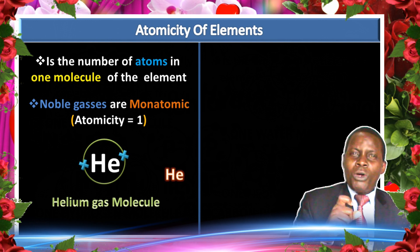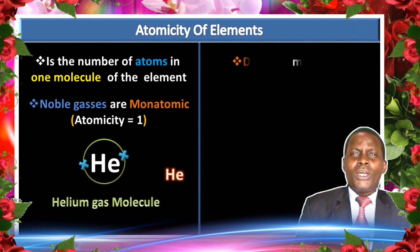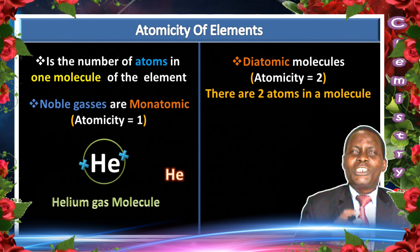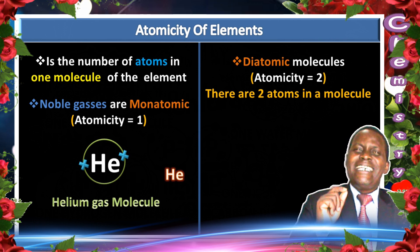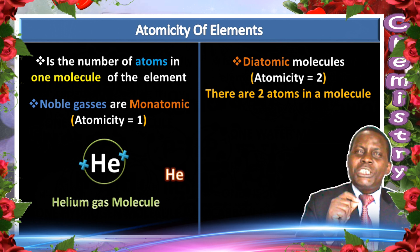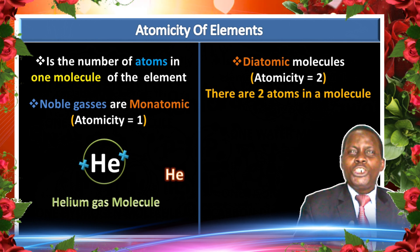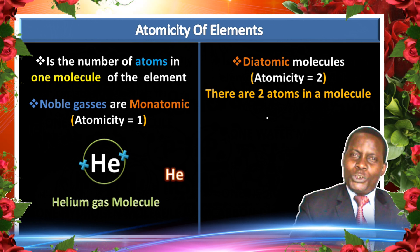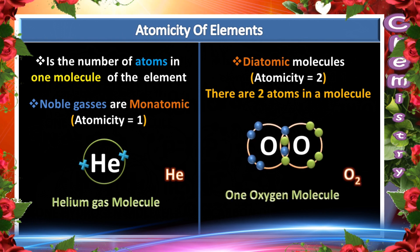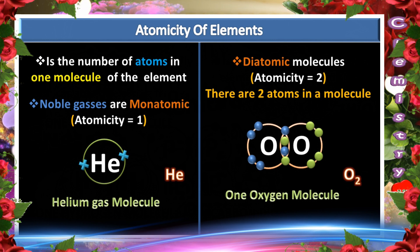A molecule consisting of two atoms is referred to as diatomic. A diatomic molecule is one which is made up of two atoms. An example of a diatomic molecule is oxygen — one molecule of oxygen has two oxygen atoms.